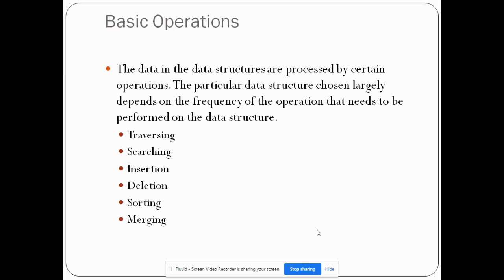Basic operations. The data in the data structures are processed by certain operations. The particular data structure chosen largely depends on the frequency of the operation that needs to be performed on the data structure. The basic operations are: traversing, where we retrieve each element in a data structure — for example, if you want to print all elements, we use traversing; searching, which is self-explanatory — if you want to search for an element inside the data structure, we use searching; insertion, if you want to add data to the data structure; and deletion, if you want to delete an element.